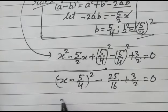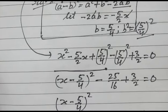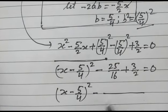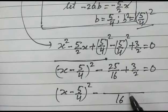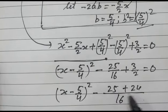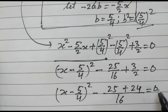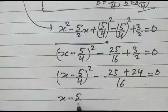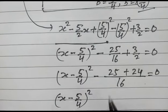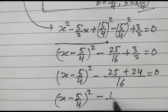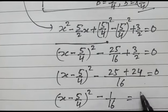Now, (x minus 5/4)² minus 25/16 plus 3/2 equals 0. Combining the constant terms: 3/2 equals 24/16, so 24/16 minus 25/16 gives minus 1/16. Therefore, (x minus 5/4)² minus 1/16 is equal to 0.